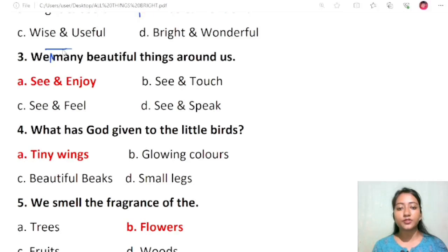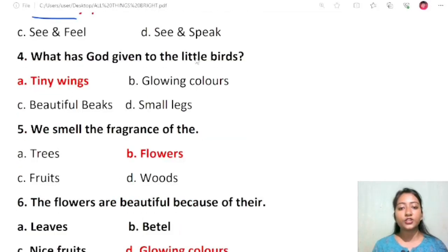Question 3: We see and enjoy many beautiful things around us. Options are see and enjoy, see and touch, see and feel, and see and speak. The correct option is see and enjoy. Question 4: What has God given to the little birds? Tiny wings, glowing colors, beautiful beaks, and small legs. The correct option is tiny wings.